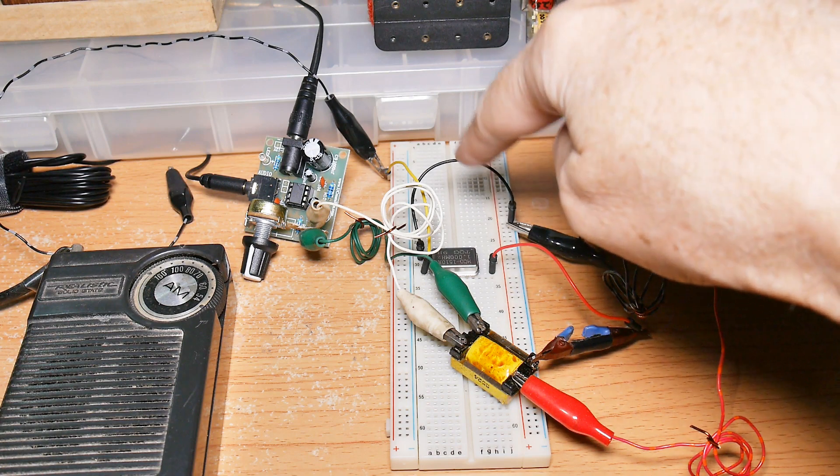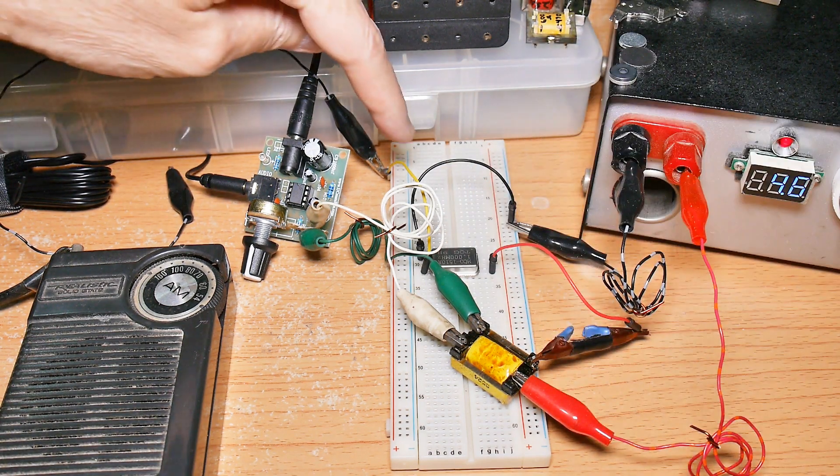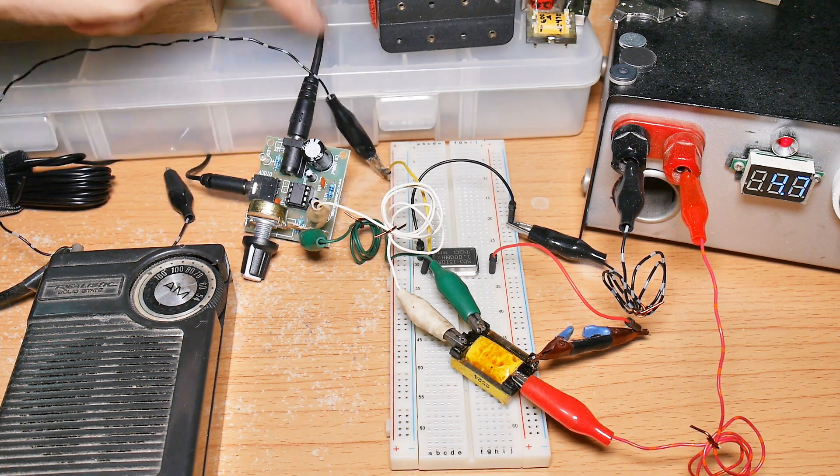And this yellow wire is connected to just a jumper, and that's acting as our antenna.